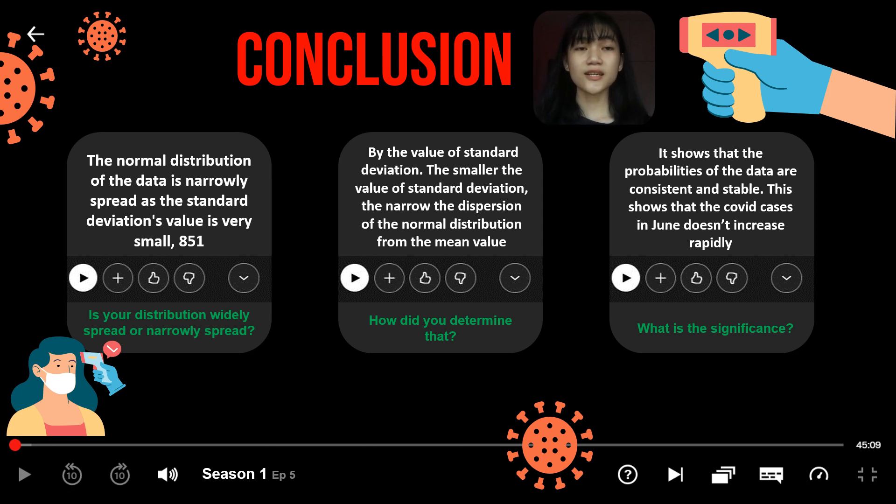Thus, the significance is, it shows that the probabilities of the data are consistent and stable, which proves that the COVID cases in June does not increase rapidly.